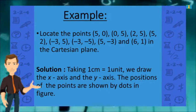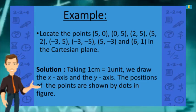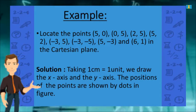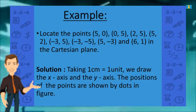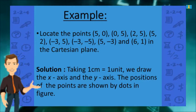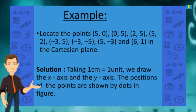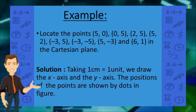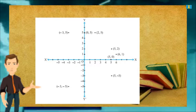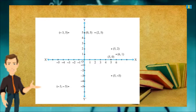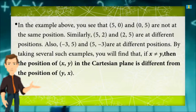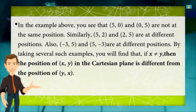Let us see an example: locate the points (5,0), (0,5), (2,5), (5,2), (-3,5), (-3,-5), (5,-3), and (6,1) in the Cartesian plane. Taking one centimeter equal to one unit, we draw the x-axis and the y-axis. The positions of the points are shown by dots in the figure. Notice that (5,0) and (0,5) are not at the same position.